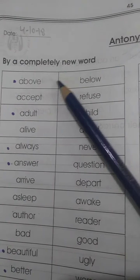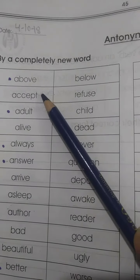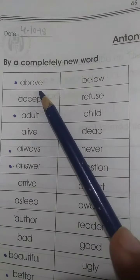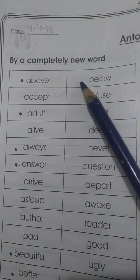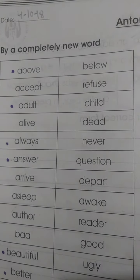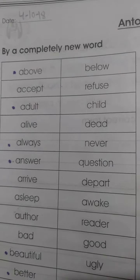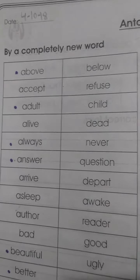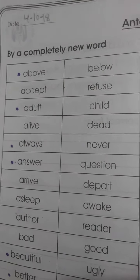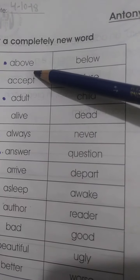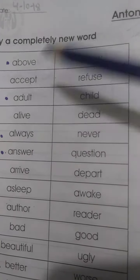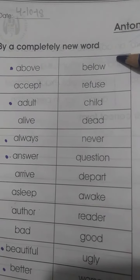Antonyms are a completely new word — antonyms are the opposite of a word. Now let's see how many antonyms are here. We will read, understand, and then we are going to proceed. So the first word is 'above' — above, and its antonym is 'below' — below.